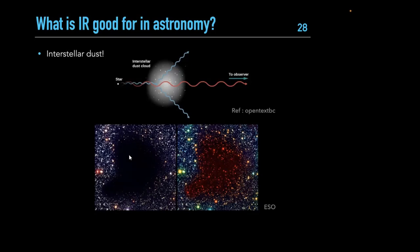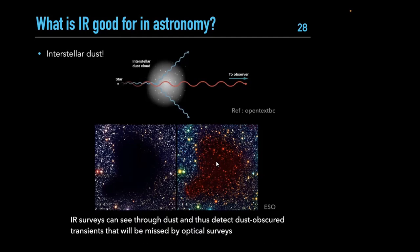A classic example is a molecular cloud that appeared as a void in optical images — people suggested explanations ranging from a lack of stars to alien civilizations blocking light. In reality, it was simply a dust cloud. The composite image including infrared data shows plenty of stars in that region with no void at all. Infrared surveys can see through dust and detect many dust-shrouded objects missed by optical surveys.